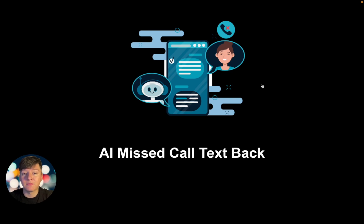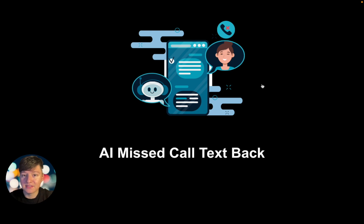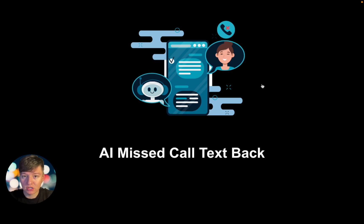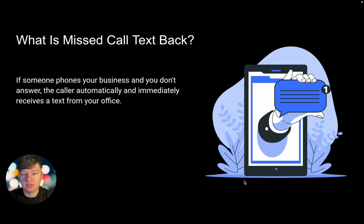In this video I'm going to show you how to sell the missed call text back feature using Go High Level to small local businesses — a to z setup. This isn't going to be a regular missed call text back feature; it's going to be AI-powered, so instead of just sending a basic automated message, we're going to have AI actually start a conversation with the lead and try to get them to book an appointment.